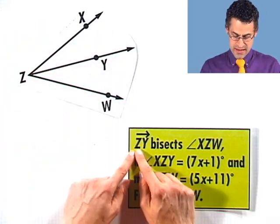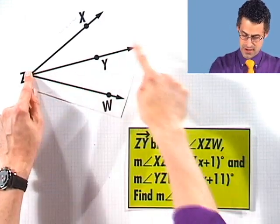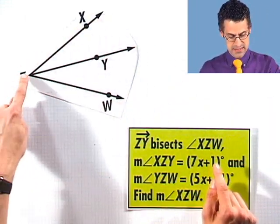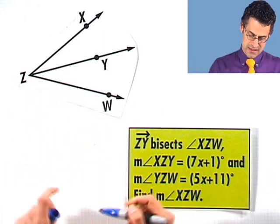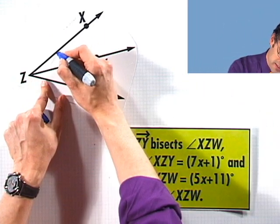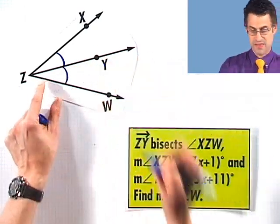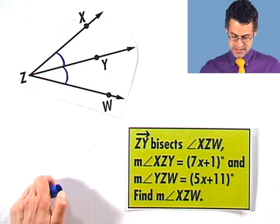I'm told that the ray ZY, which is this ray right here, bisects the angle XZW. So that means that the measure of this angle right here is going to be the same as the measure of that angle right there. That's what it means to be an angle bisector.